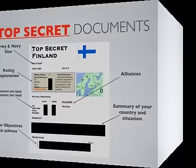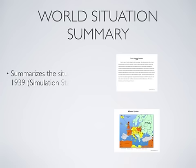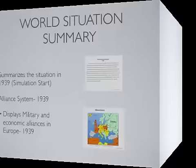The World Situation Summary describes the political situation in the world in 1939. It also shows you the alliance system that was in place at that time.